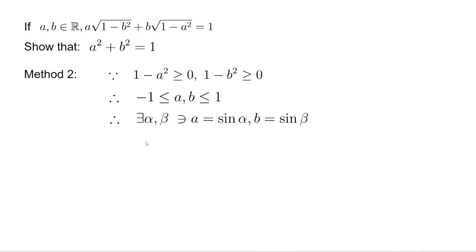So we can represent them as sine functions. There exists some angle alpha and beta such that a equals sine alpha and b equals sine beta. Now we look at the original equation. We replace that with alpha and beta. Notice that square root of 1 minus sine squared beta is cosine beta. Now we can get to this equation pretty straightforward.